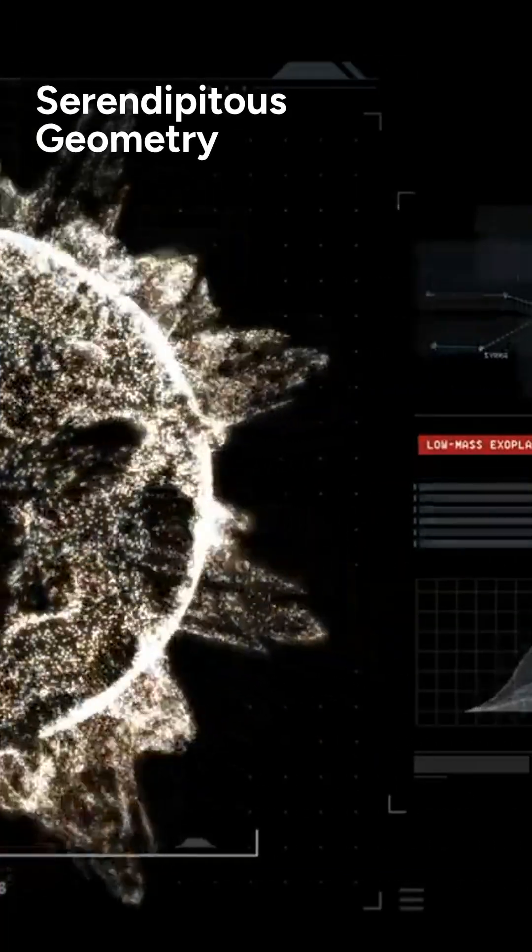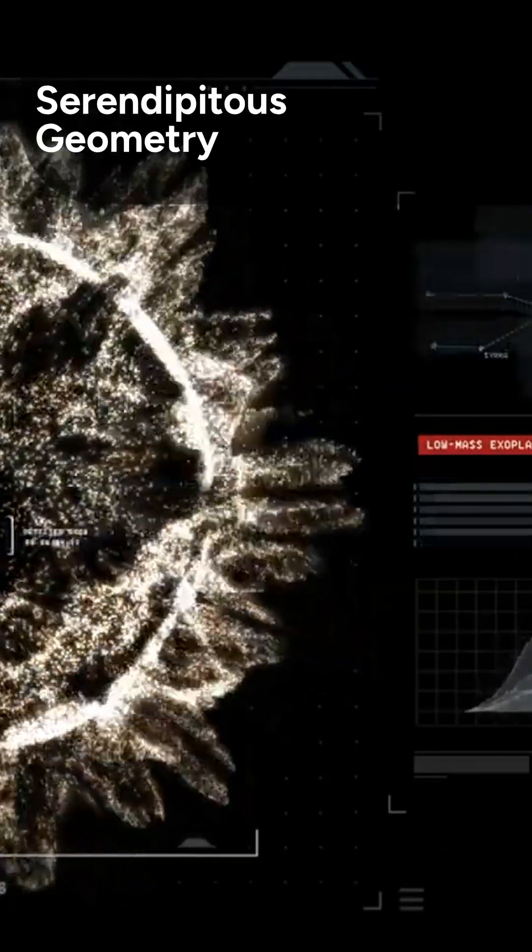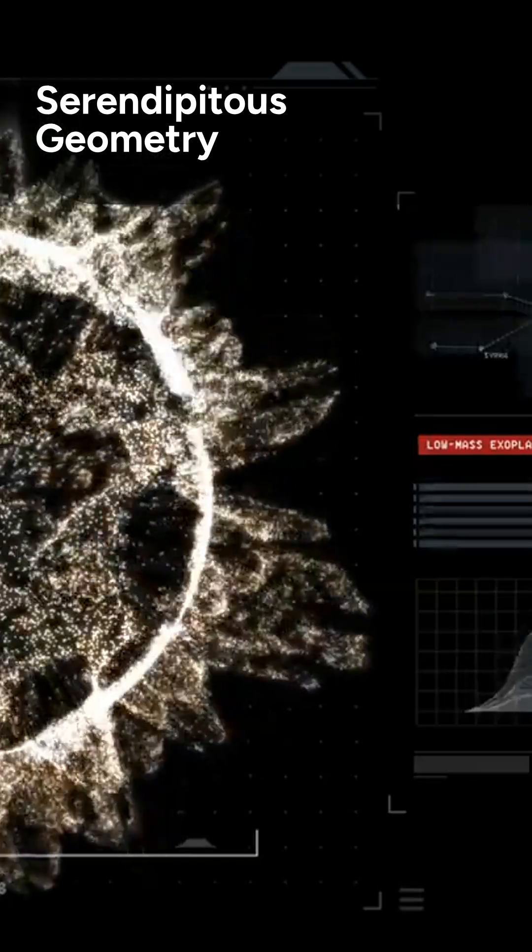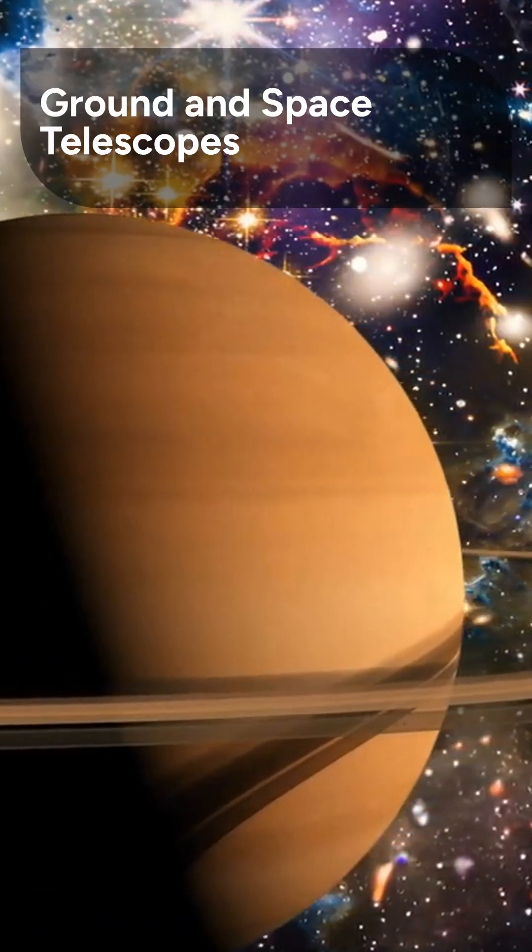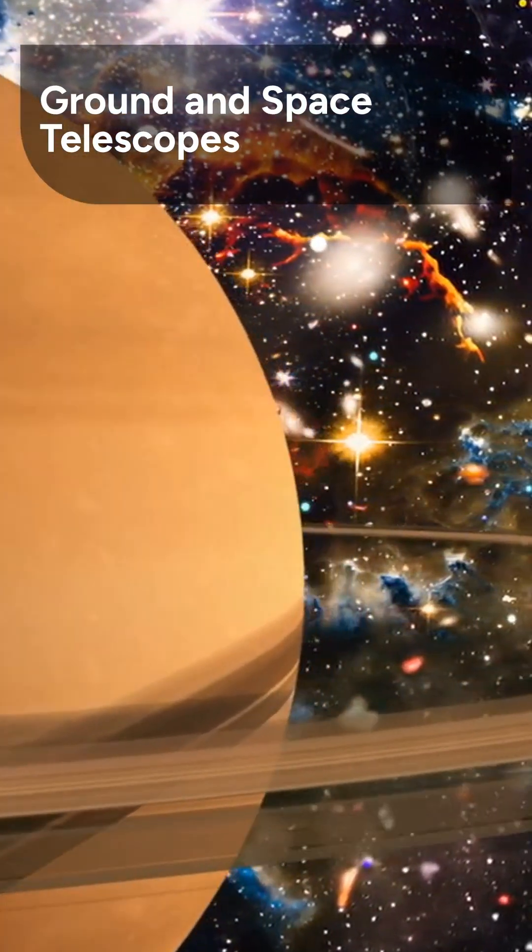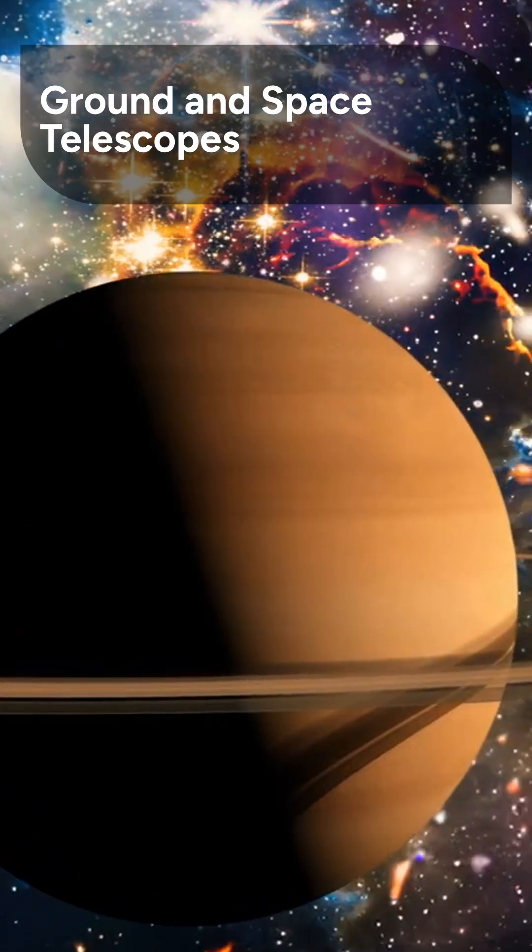For this particular rogue planet, a lucky alignment of telescopes and perfect timing allowed scientists to overcome the mass-distance degeneracy problem. The microlensing event was observed by multiple ground-based telescopes and the space-based telescope, Gaia.